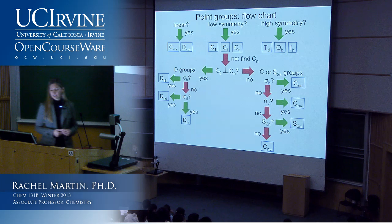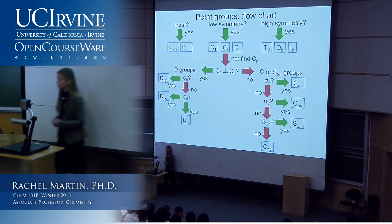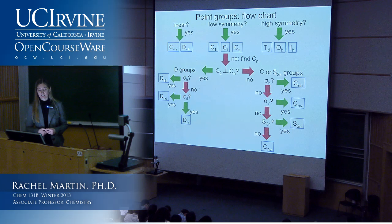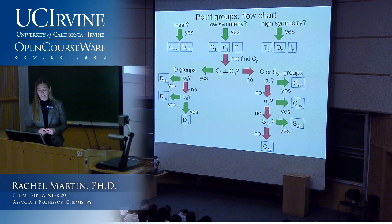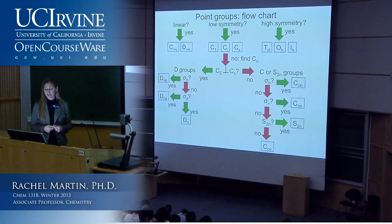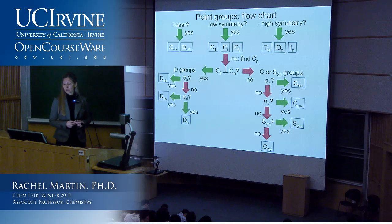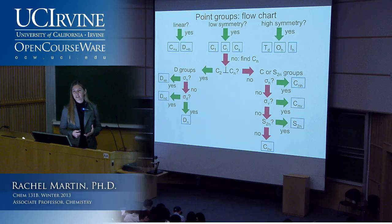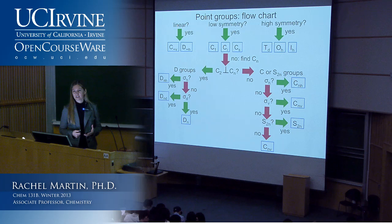Going through the D groups: does the molecule have a horizontal reflection plane perpendicular to the principal axis? If so, it belongs to a DNH group. If not, check whether it has a dihedral reflection plane—which also contains the principal axis—and classify accordingly. If it doesn't have C2 axes perpendicular to the principal axis, we go down the other branch of this tree. Rather than going through all of this abstractly, let's just do some examples.